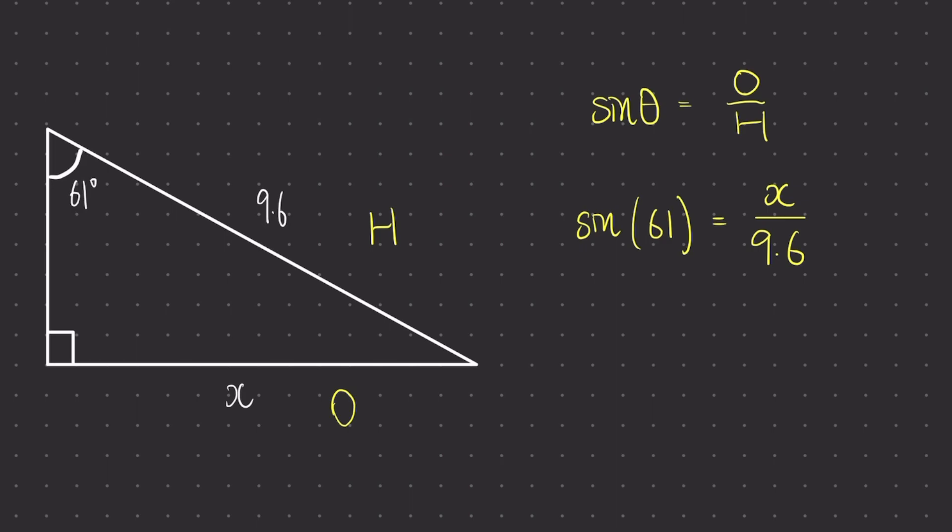If we divide, we divide sine of 61 by something. So here I'm going to multiply both sides by 9.6, the next line will look like 9.6 times by sine of 61, and of course this is equal to x.